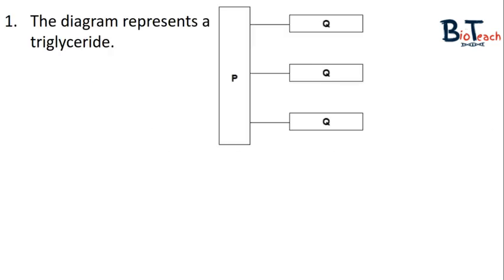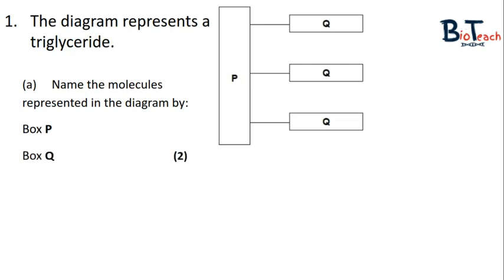The first question gives you a diagram that represents a triglyceride. It asks you to name the molecules represented by boxes P and boxes Q. This part of the question holds two marks in total. You should be able to tell that box P is a glycerol molecule and box Q is the fatty acid chain. Remember this is a triglyceride, so there are three fatty acid chains in this diagram.